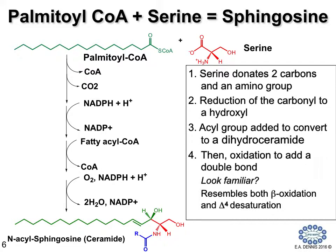This complex is then reduced and an additional acyl group is added as an acyl-CoA to the amino group on the sphingosine, which gives rise to a dihydroceramide, and then another oxidation produces the double bond in the final compound. Shown here is actually an N-acyl sphingosine, another name for which is ceramide.